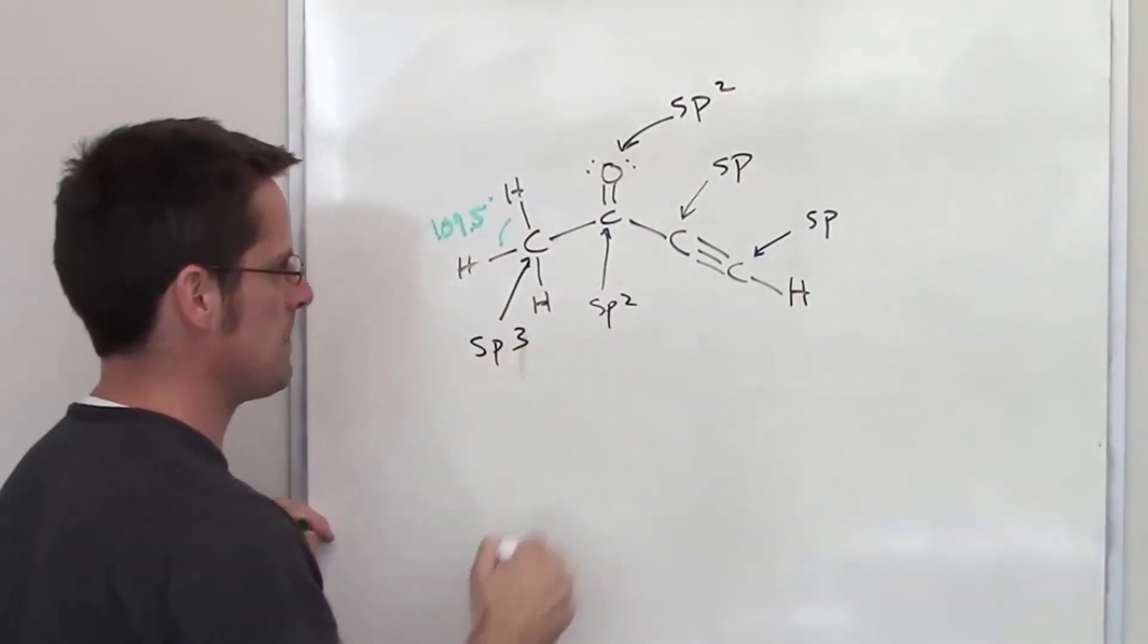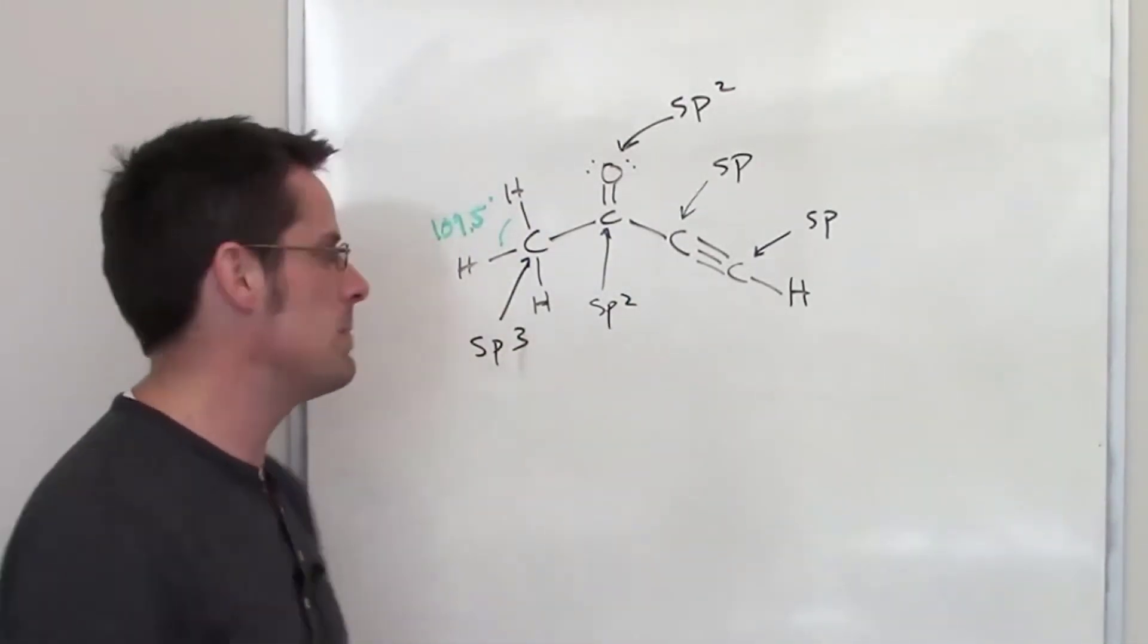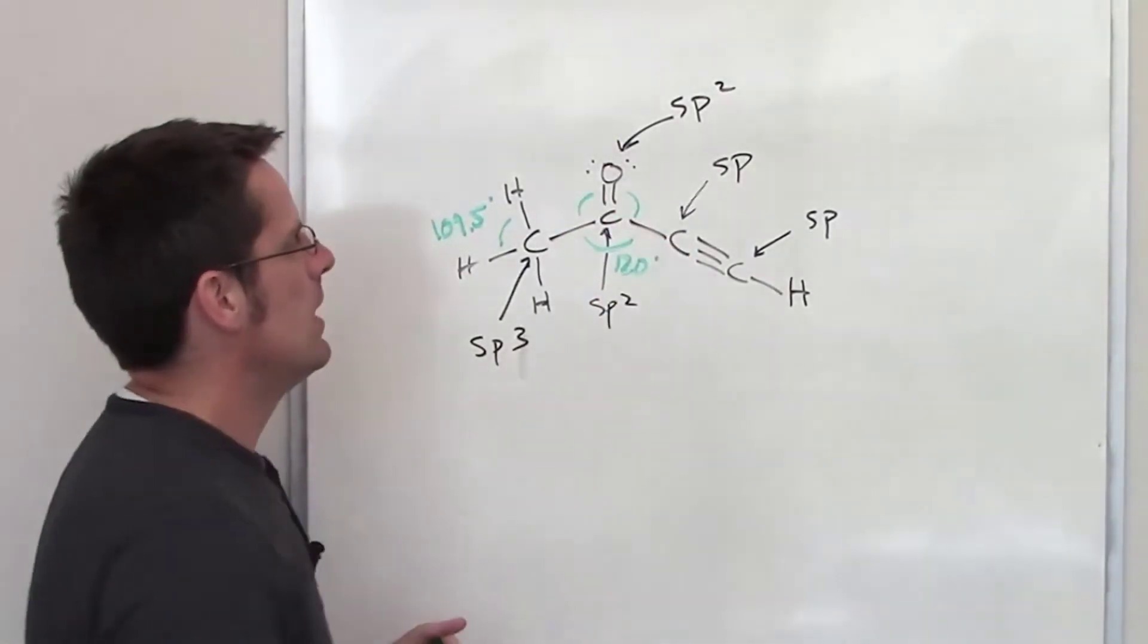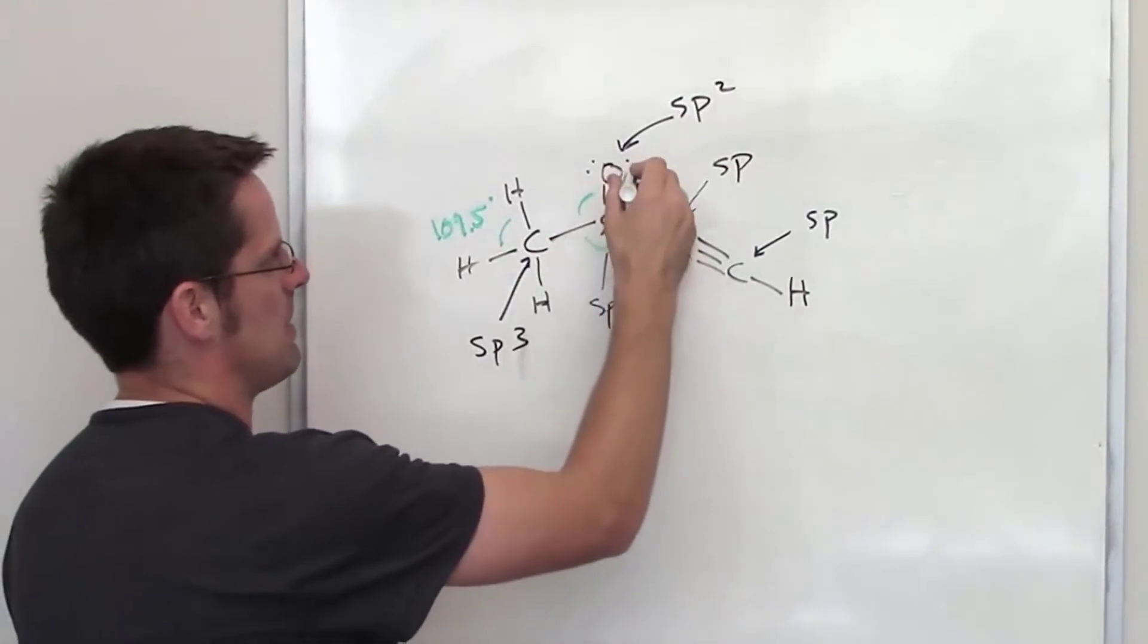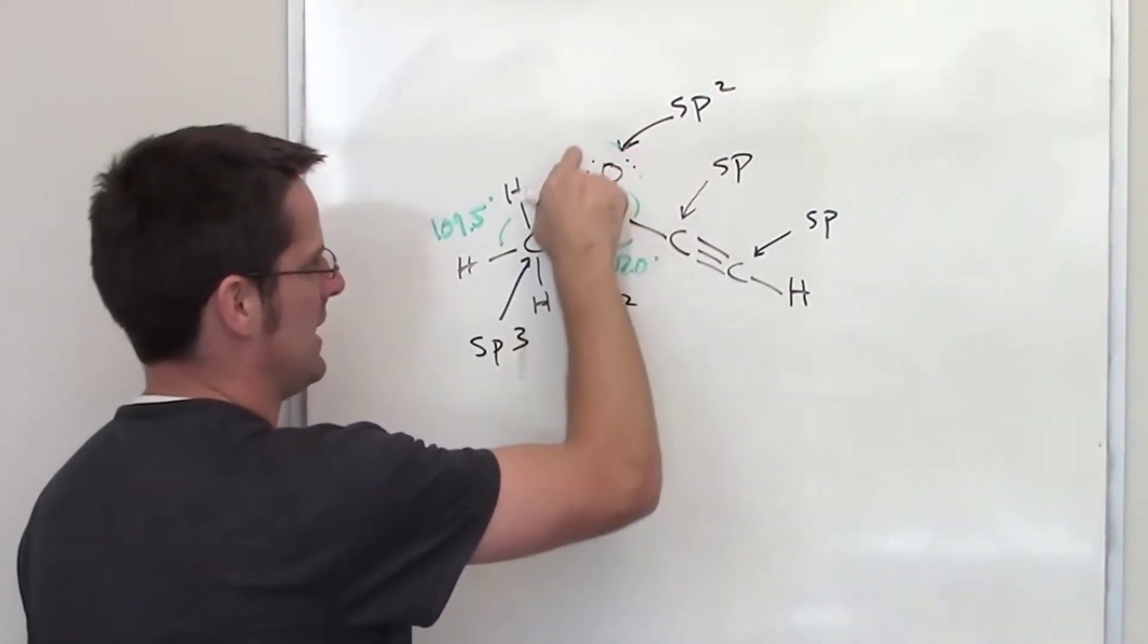Around an sp2 hybrid center, a center that has three things around it, is going to be about 120 degrees. And then the same thing is going to be up here: 120 degree bond angles between each of the things, each